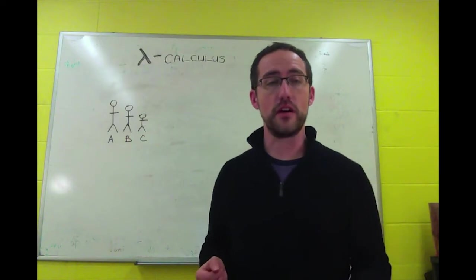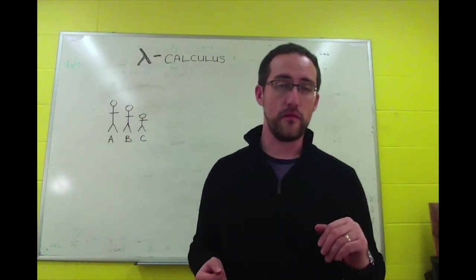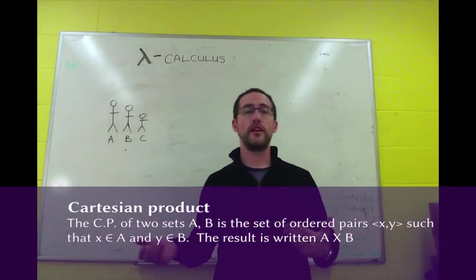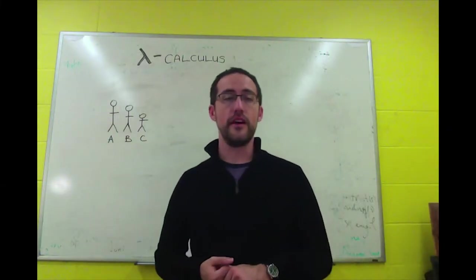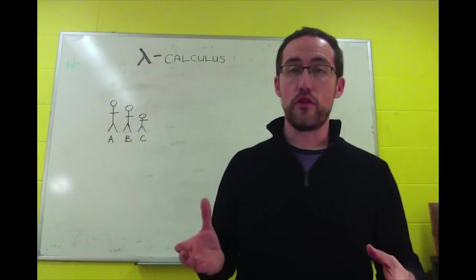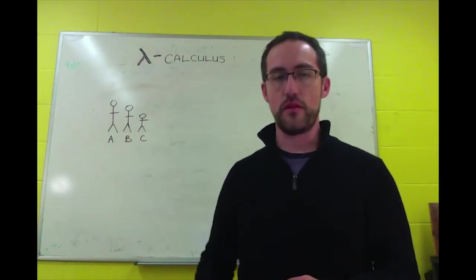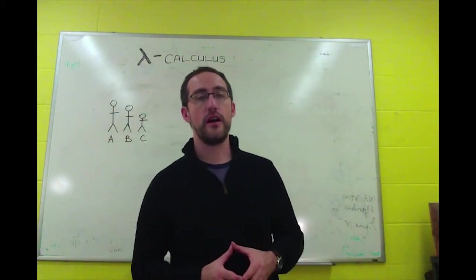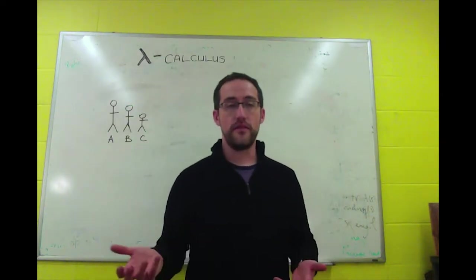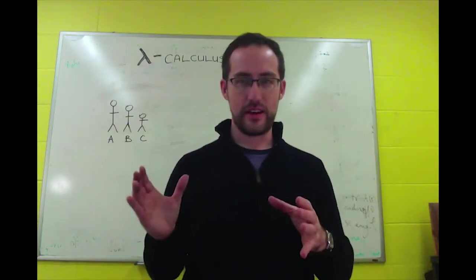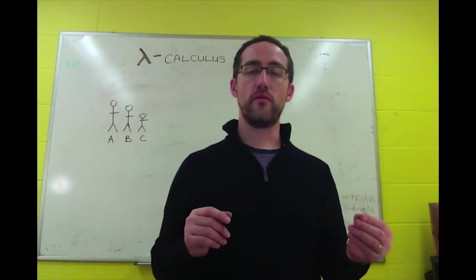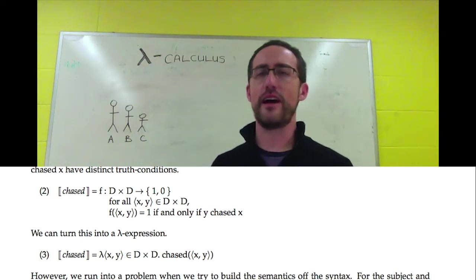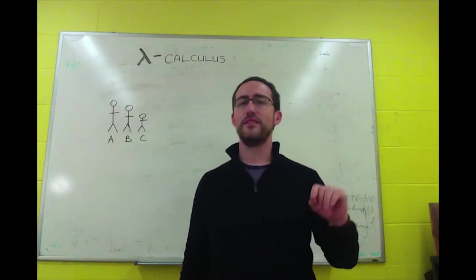In example two, we have this function — from the Cartesian product of the domain with the domain to the set {1, 0}. For any ordered pair in the domain, f of that ordered pair will equal 1 if and only if the second member chased the first member. We can turn this into a lambda expression: lambda ordered pair (x, y), chased of that ordered pair. That value equals 1 if y chased x, and 0 otherwise. This works well and you'll see it a lot in the literature, usually on the philosophy side.